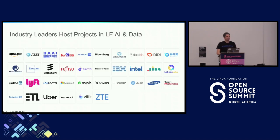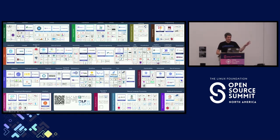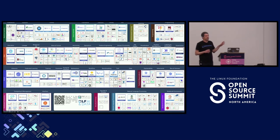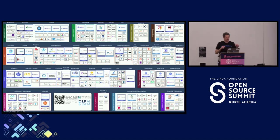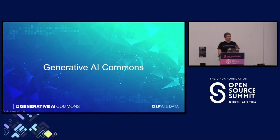Some industry leaders host projects here, not all of them are members yet. There's an interactive landscape — you can scan the QR code — with all the open source AI projects we have. The 64 LF AI projects are marked with a blue box, and you can filter different things and see it in different ways. I encourage you to try it.